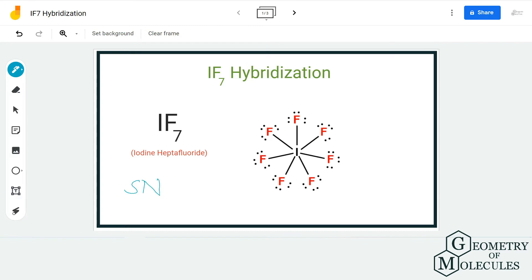To start with, we first look at the Lewis structure because it helps us to know the number of bonding pairs and non-bonding pairs of electrons on the central atom. If you look at this molecule, the iodine atom is forming seven bonds with seven fluorine atoms and there are no lone pairs on the central atom.